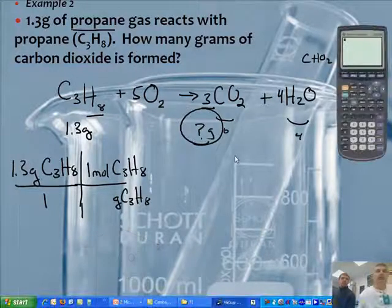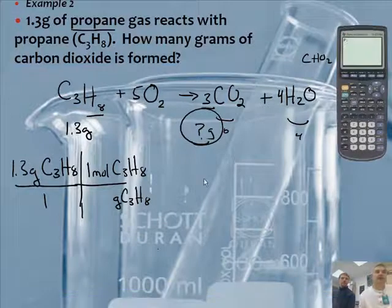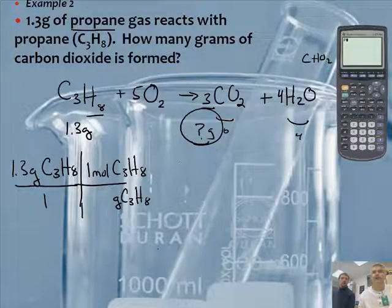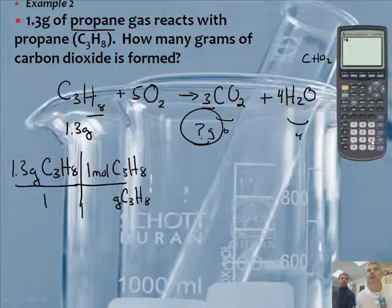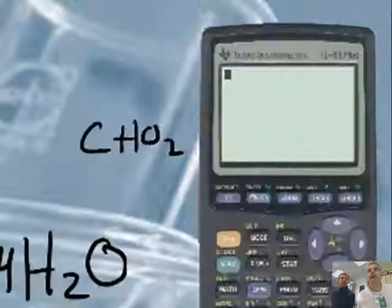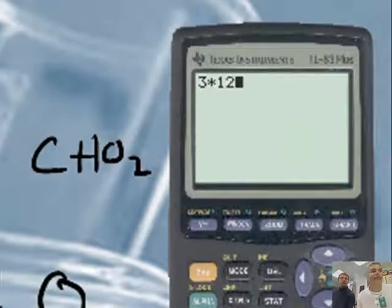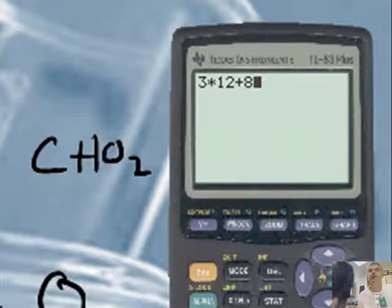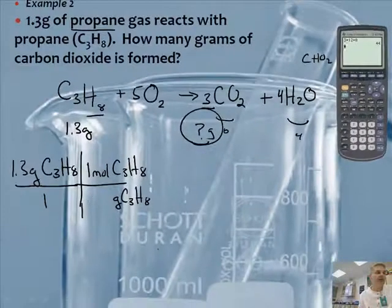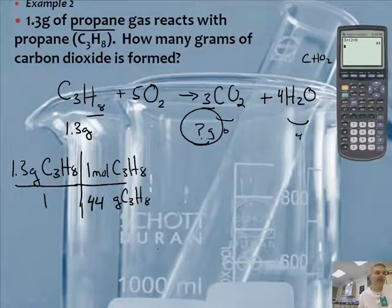Okay, to do this now, what we need to do is figure out what is the molar mass of C3H8. So on my calculator, there are three times 12, the weight of carbon is 12, plus 8. And that gives us a molar mass of 44 grams.